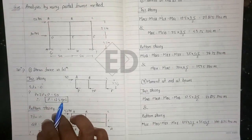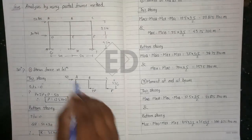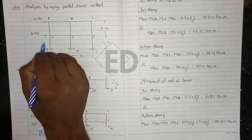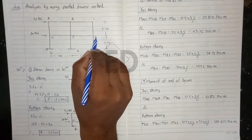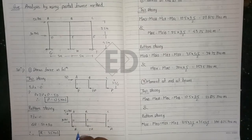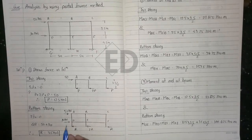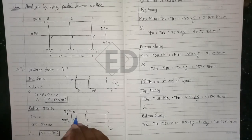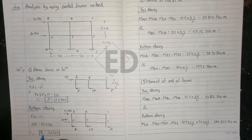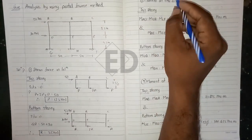For the same calculation for the bottom story, the section is passed from the mid of the span. This is the shear force in the column. By making the horizontal summation, we get R equals 35 kN.